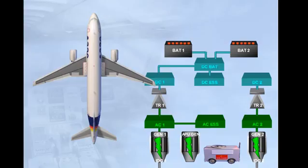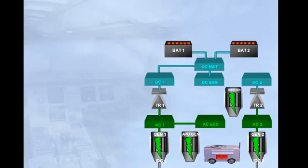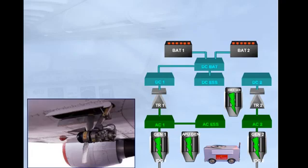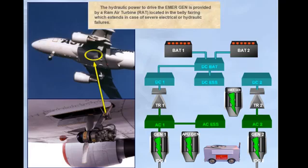As a backup, there is a hydraulically driven emergency electrical generator, EmerGen. The hydraulic power to drive the emergency generator is provided by a RAM air turbine, RAT, located in the belly fairing, which extends in case of severe electrical or hydraulic failures.